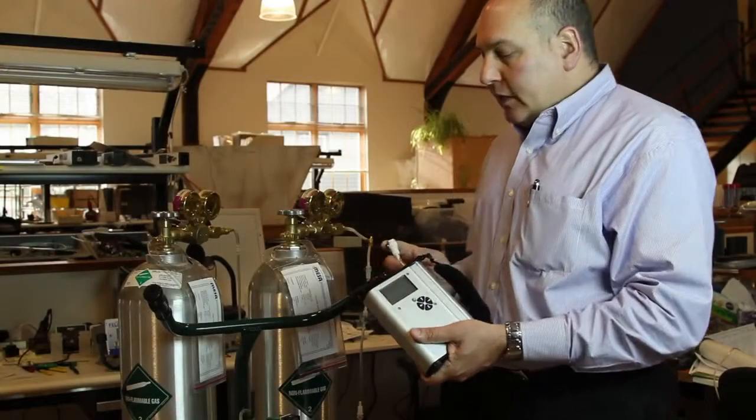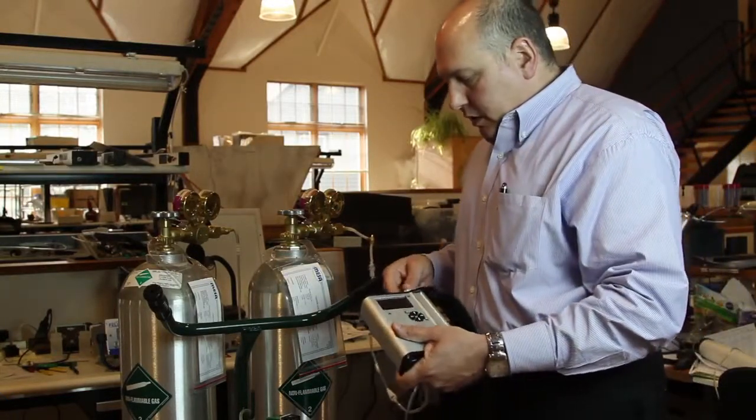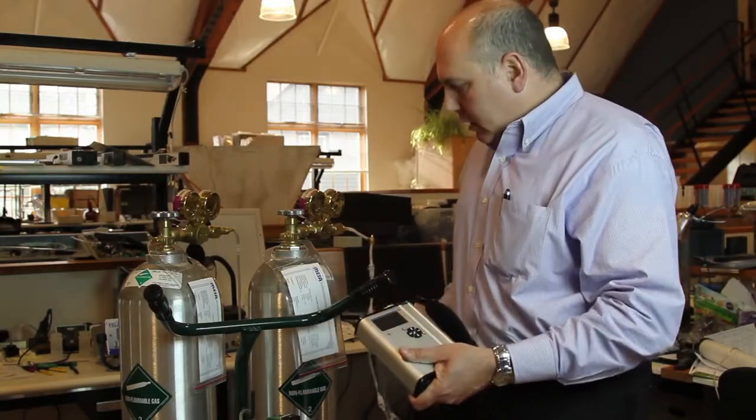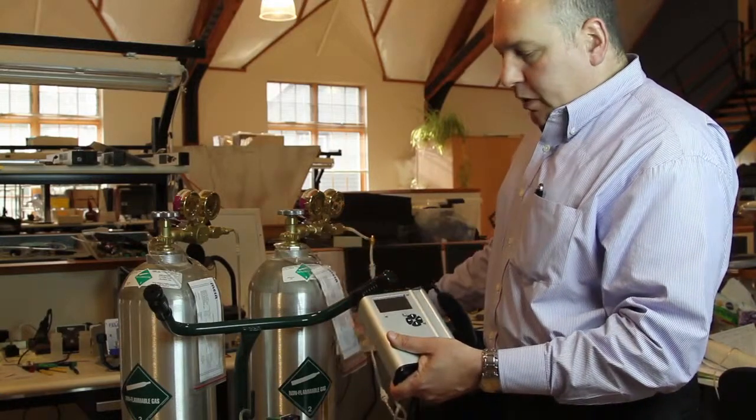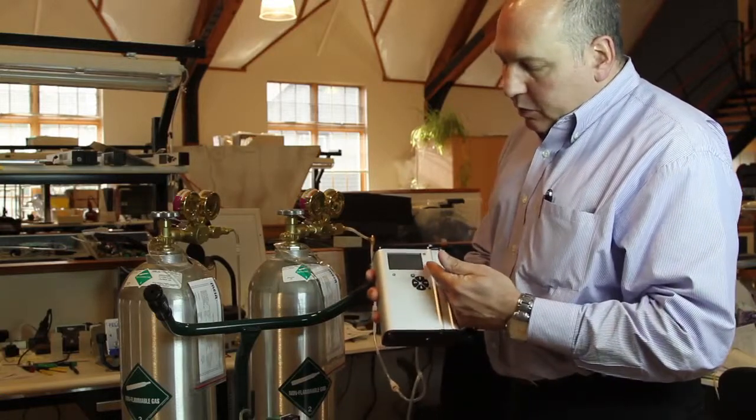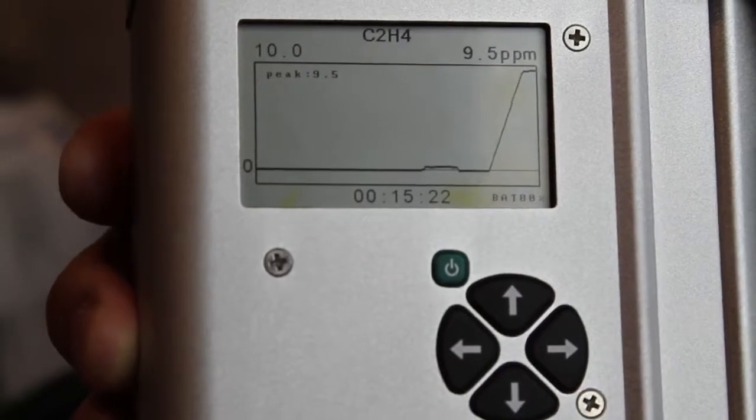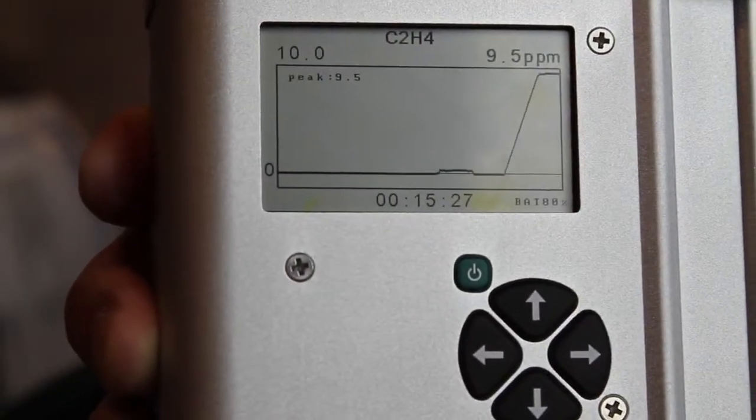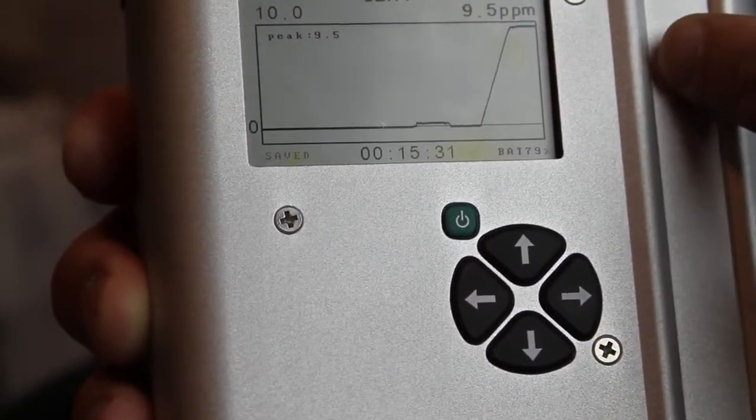I'm going to connect it now to a known gas so that we can see a reading. You can see that this is an operational prototype. This gas is rated at 9.9 parts per million. So you see the reaction is pretty quick. We're up to 4 parts per million already. Within about 5 seconds we reach the target concentration. And as I mentioned, 9.9 and we're getting 9.5.